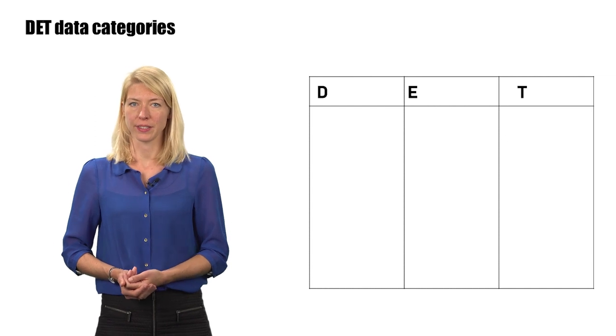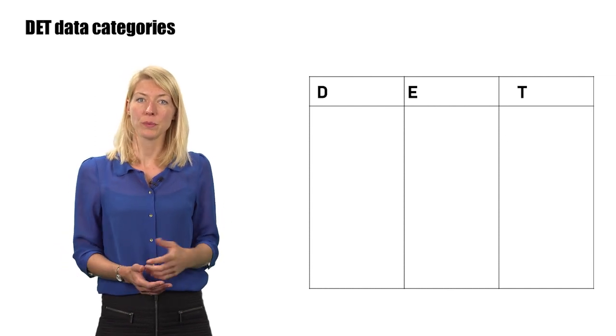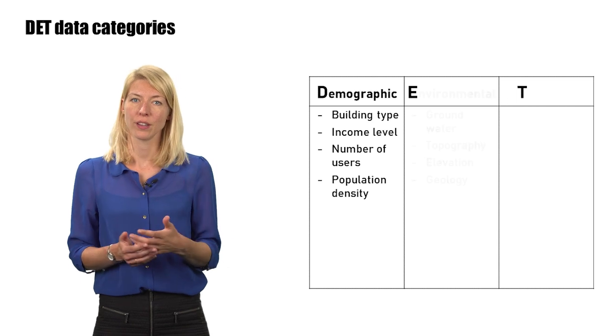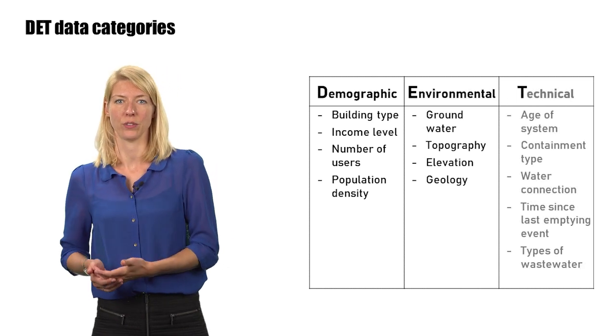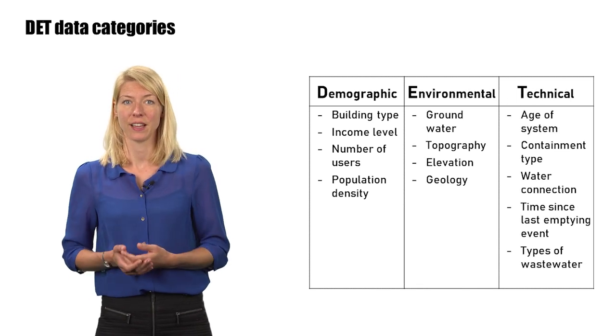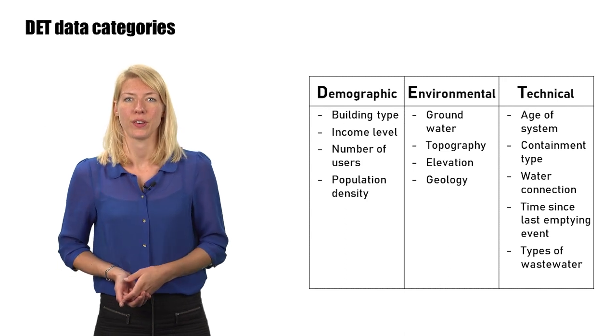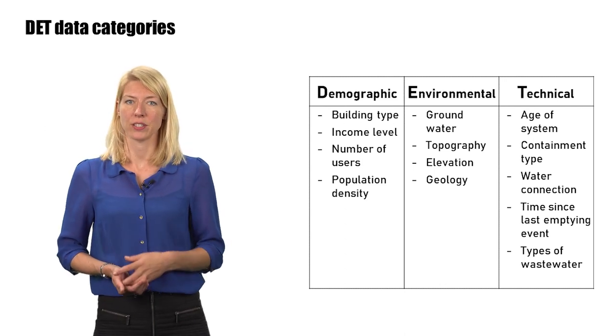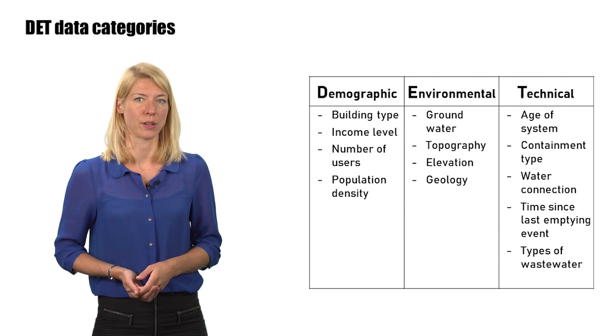Based on our experience, quantities and qualities of fecal sludge can be grouped by these categories we call demographic, environmental, and technical data, or DET. These are all examples of DET data that might potentially correlate with fecal sludge quantities or qualities.